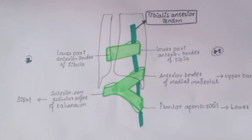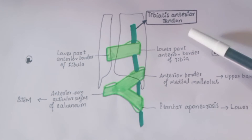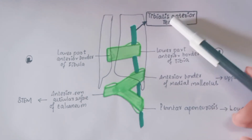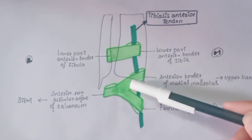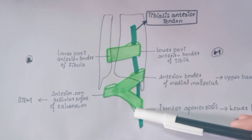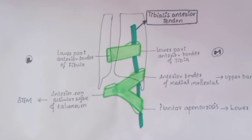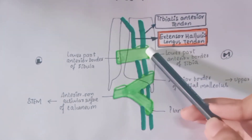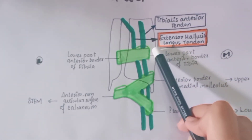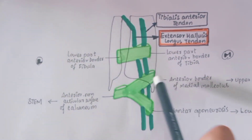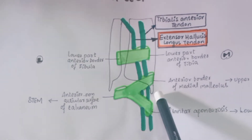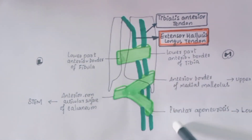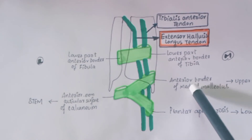The contents from medial to lateral side include the tibialis anterior tendon, which is enclosed by the superior extensor retinaculum and by the upper band of the inferior extensor retinaculum, but not by the lower band. Then comes the extensor hallucis longus tendon, which is not enclosed by the superior extensor retinaculum and not by the lower band, but is enclosed by the upper band.